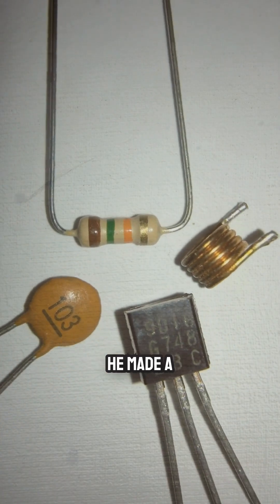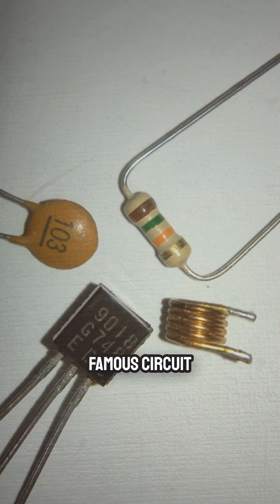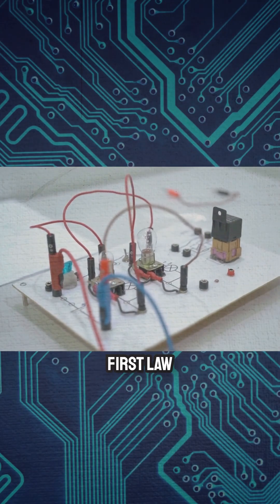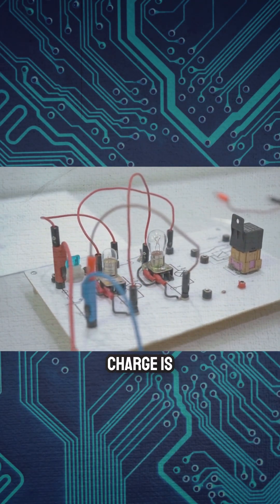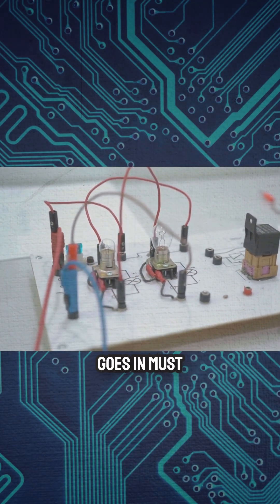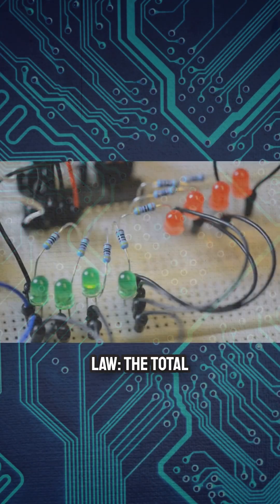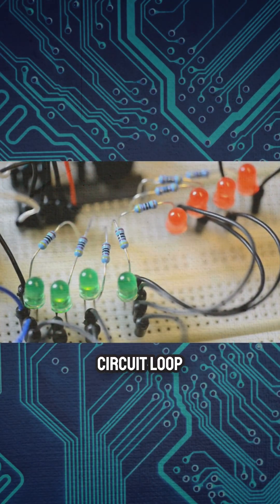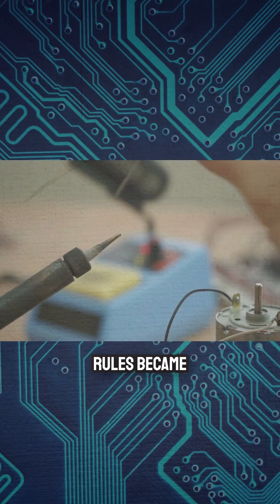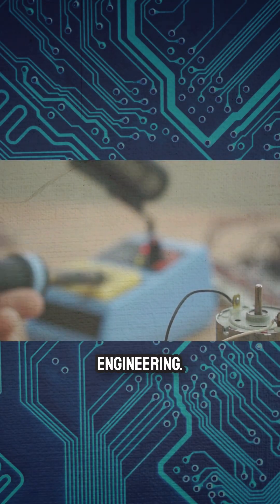At university, he made a discovery that changed physics forever, his famous circuit laws. Kirchhoff's first law states that electric charge is always conserved in a circuit. What goes in must come out. His second law, the total voltage around a closed circuit loop is always zero. These two rules became the foundation of electrical engineering.